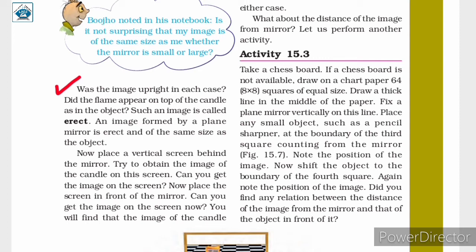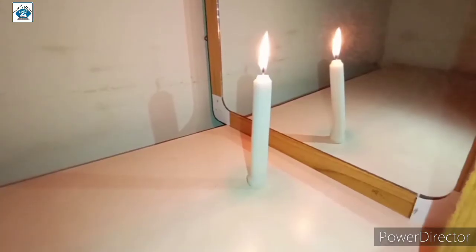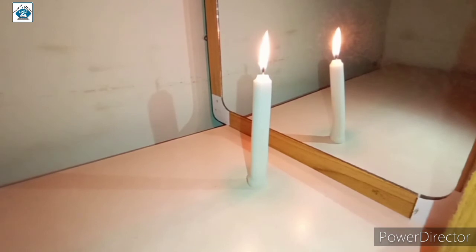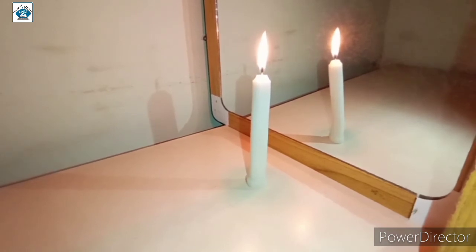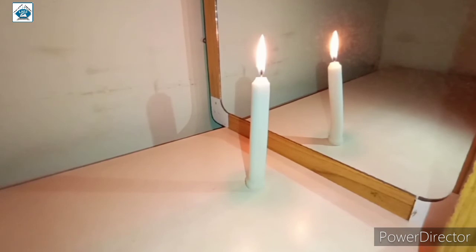An image formed by a plane mirror is erect and of the same size as the object. You need to place a lighted candle in front of a plane mirror as shown in figure 15.6, and try to see the flame of the candle in the mirror. The image we see in the mirror appears similar to the candle.